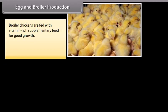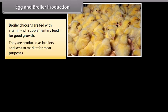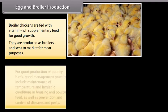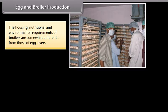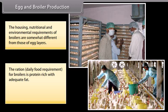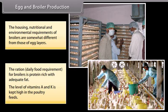Broiler chickens are fed with vitamin-rich supplementary feed for good growth and are sent to market for meat purposes. For good production of poultry birds, good management practices include maintenance of temperature and hygienic conditions in housing, poultry feed, as well as prevention and control of diseases and pests. The housing, nutritional and environmental requirements of broilers are somewhat different from those of egg layers. The daily food ration for broilers is protein-rich with adequate fat, and the levels of vitamins A and K are kept high in the poultry feeds.